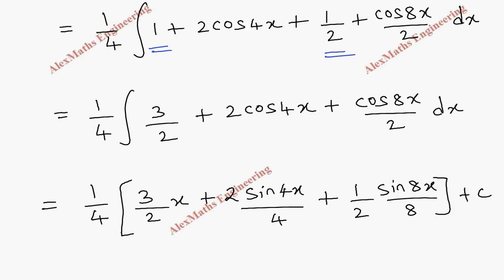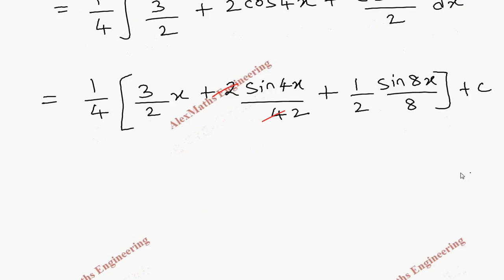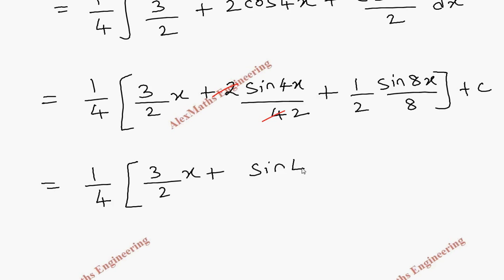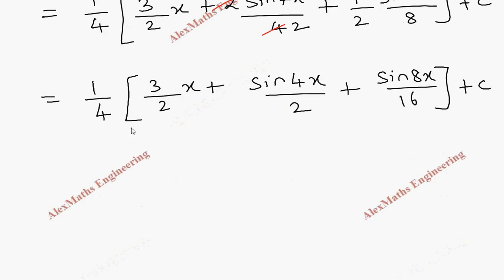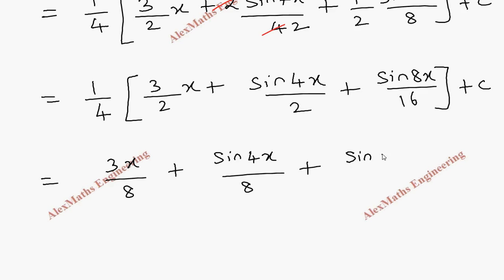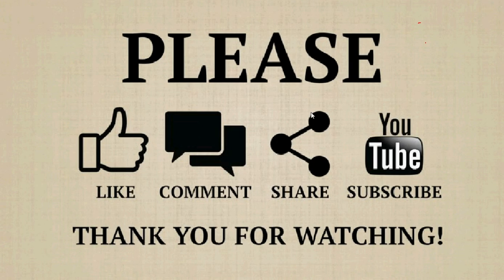We cancel whatever is possible. These two cancel, leaving 2. We can multiply 1/4 inside or keep it outside. So: (1/4)(3x/2 + sin4x/2 + sin8x/16) + C. Multiplying 1/4 through as in the previous problem: the first term is 3x/8, the second is sin4x/8, and the last term is sin8x/64, plus C.